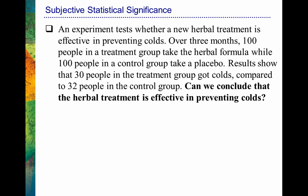Let's go through a brief example about subjective statistical significance, to point out how much we need a clear process that will arrive at a quantitative value for determining statistical significance. An experiment tests whether a new herbal treatment is effective in preventing colds. Over three months, 100 people in a treatment group take the herbal formula, while 100 people in a control group take a placebo. They were randomly assigned to both groups. Results show that 30 people in the treatment group got colds compared to 32 people in the control group. Can we conclude that the herbal treatment is effective in preventing colds?